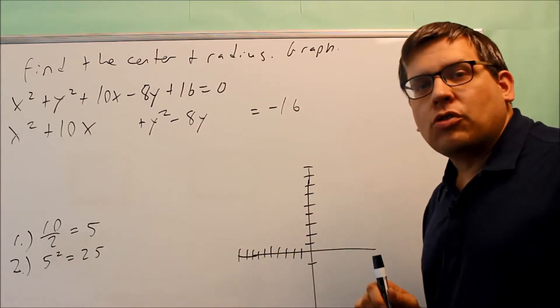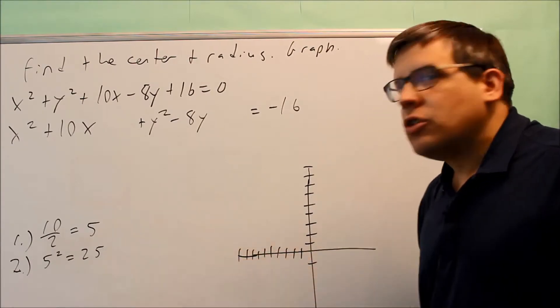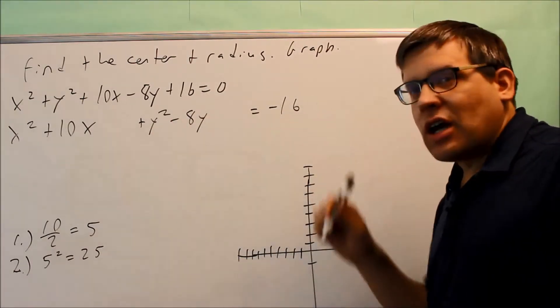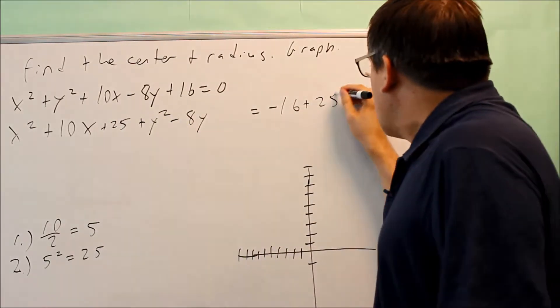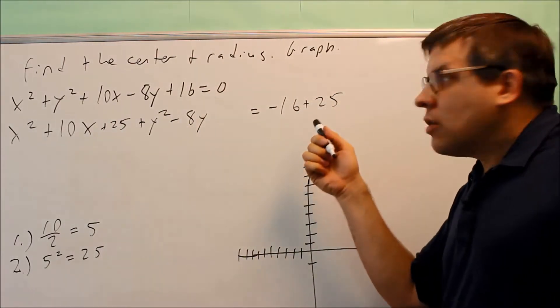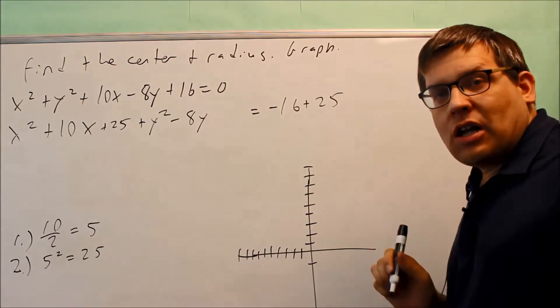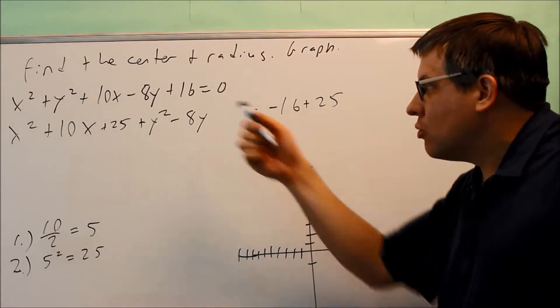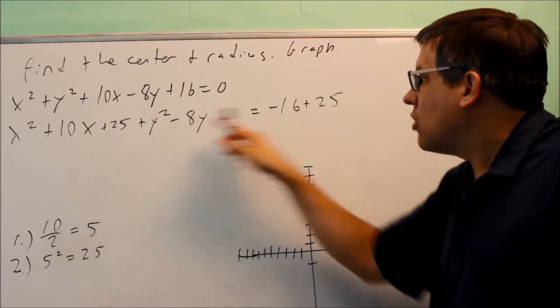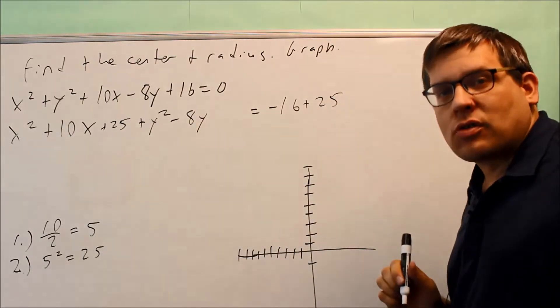The number that you get here when you do complete the square in step number 2, you're going to add that to both sides of the equation. So I'm going to add 25 here. Then I'm going to add 25 over there. It's really important to remember to add it to the right-hand side also because if you don't, you're changing the problem and it's not equal to what it originally was. So you want to keep the equation balanced and that's why you add it to both sides of the equation.